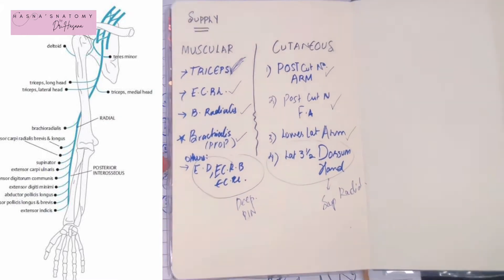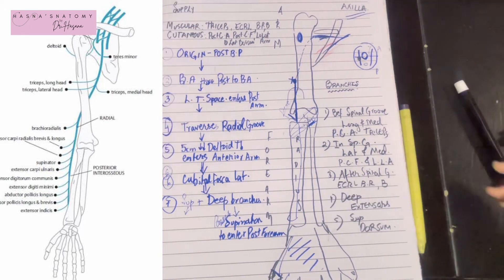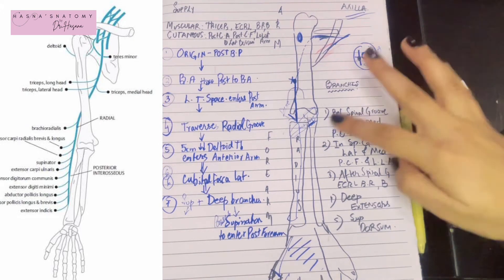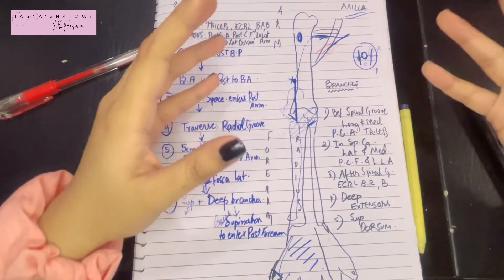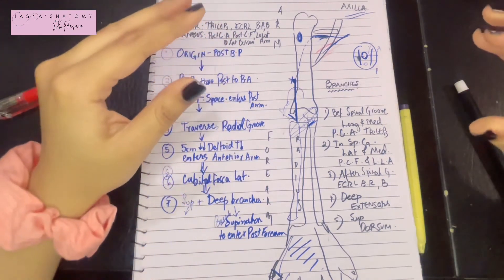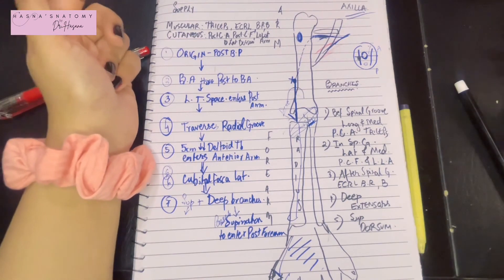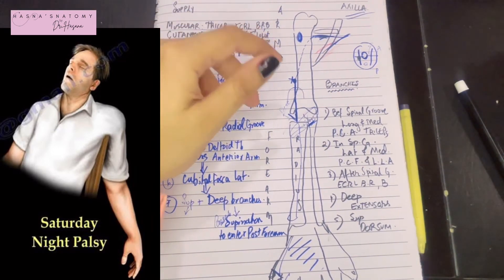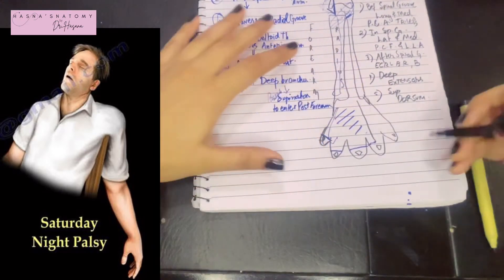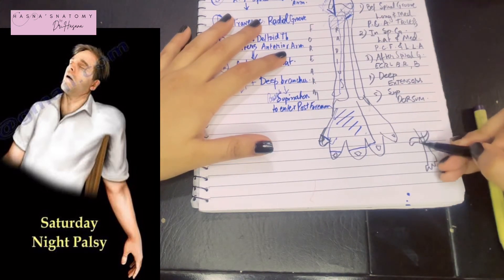Now you know the branches of the radial nerve, what they supply, and where. Let's talk about a very important clinical correlation: Saturday Night's Palsy, also known as crutch paralysis. What happens on Saturday nights is that people take a nap and sometimes fall asleep on rocking chairs with their limbs hanging on the sides.